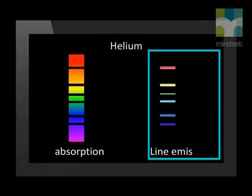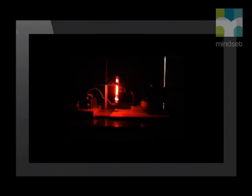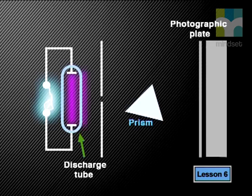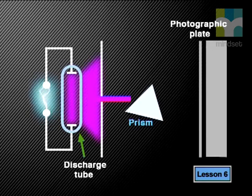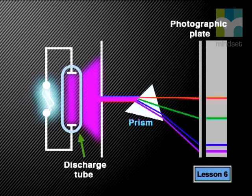Remember that line emission spectra are emitted by an excited gas. We can excite a gas by placing a potential difference across it. We can view the line emission spectrum formed with the spectroscope.